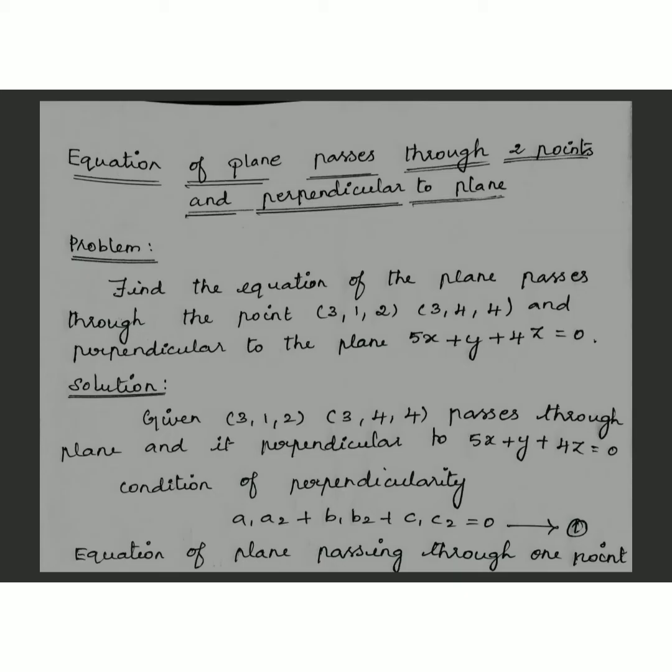Now we see one problem for the first type. Find the equation of the plane that passes through the points (3, 1, 2) and (3, 4, 4), and is perpendicular to the plane 5x + y + 4z = 0. Here, two points and one plane are given.